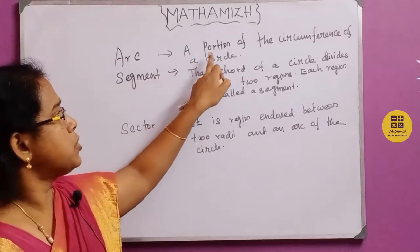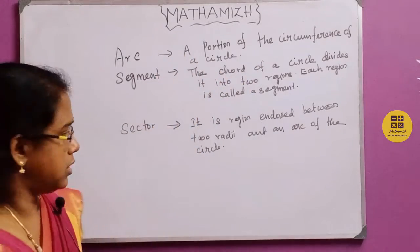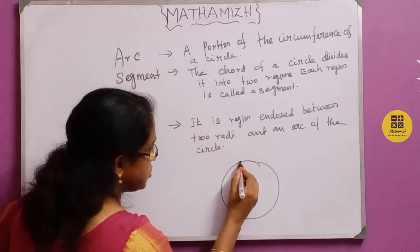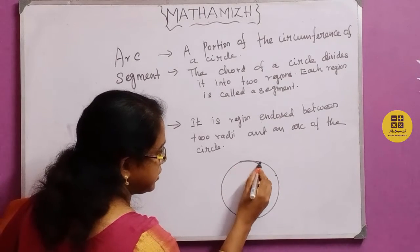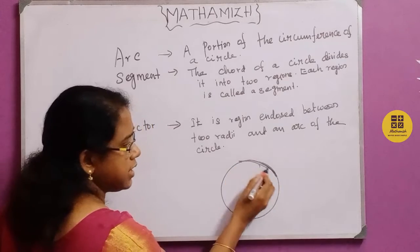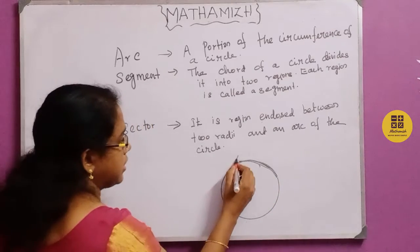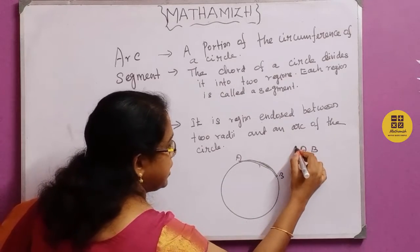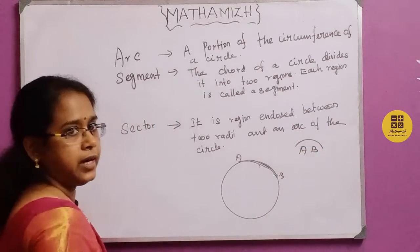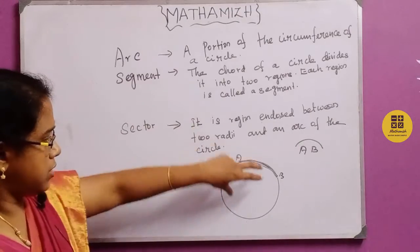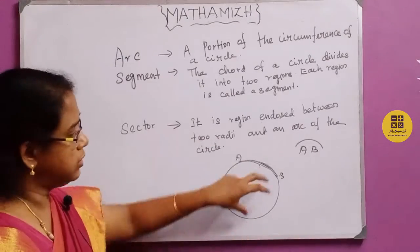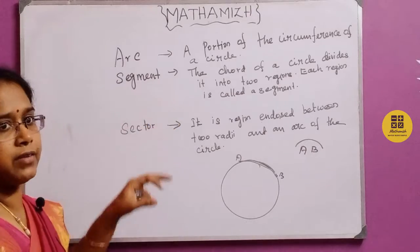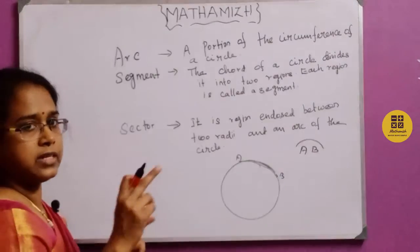The arc means the portion of the circumference of the circle. If we mark two points A and B on the circle, the arc is the portion of the circumference between those two points, denoted as arc AB.